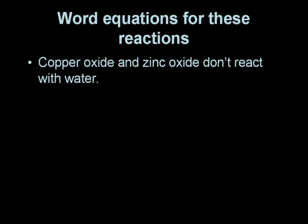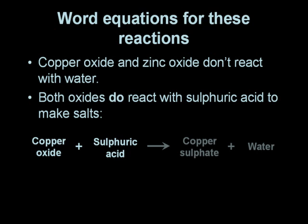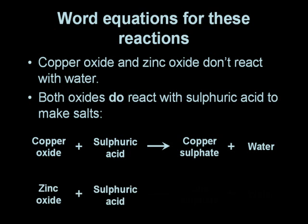Because copper oxide and zinc oxide don't react with water, there is no need to write a word equation for these cases. However, both of the oxides do react with sulphuric acid and we can summarise the reactions as shown in these word equations: copper oxide plus sulphuric acid makes copper sulphate and water; zinc oxide plus sulphuric acid makes zinc sulphate plus water.